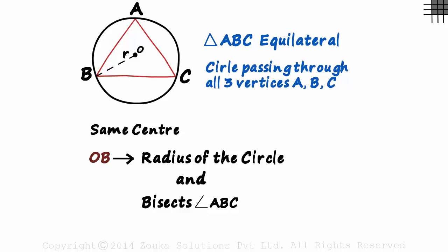As all angles of an equilateral triangle equal 60 degrees, these two will equal 30 degrees each.